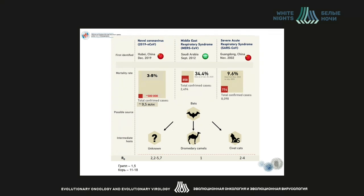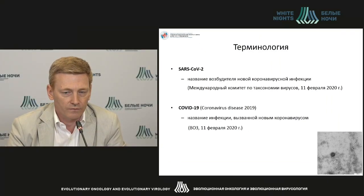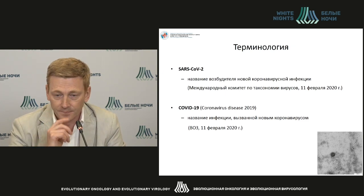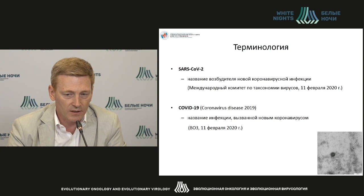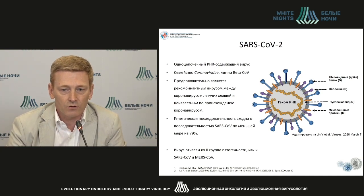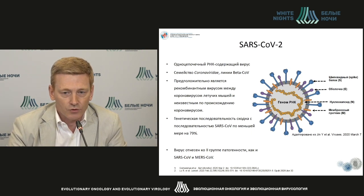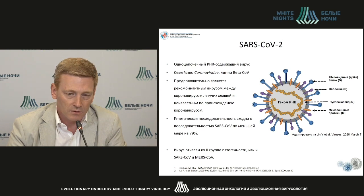Regarding terminology: two terms were accepted on the same day. The first is the name of the pathogen — SARS-CoV-2 — designated by the International Committee on Taxonomy of Viruses. The second term is the name of the infection itself. WHO sometimes calls this virus COVID-19, but more correctly COVID-19 refers to the disease caused by the pathogen SARS-CoV-2. It is an RNA-containing virus of the beta-CoV group — a recombinant pathogen between bat coronavirus and a coronavirus of unknown origin, very similar to SARS of the first type.